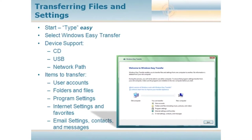The Easy Transfer Wizard has device support for a CD, a USB drive, or a network path — those are the three methods or locations to put the data when transferring files and settings from your old computer to your new computer. Some of the items it'll transfer for you are user accounts, all the folders and files belonging to those accounts, your program settings, your internet settings, your favorites, your email settings, your contacts, and all of your messages. You can customize what you want to take with you and what you want to leave behind.